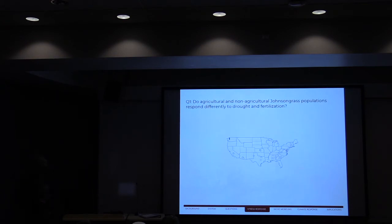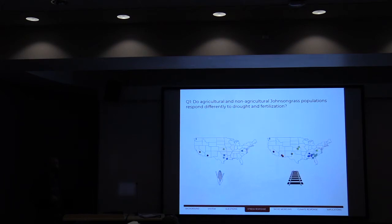Starting with that first question, do agricultural and non-agricultural populations respond differently to drought and fertilization? This is going to be an experimental design, and it's important to select our populations that we work on carefully. Here on a map, these are populations that we have seed material from the same increased garden here in Blacksburg, but their sources are from all these points across the United States. We want to make sure we're selecting the right ones for the experiment. Obviously, we select ag and non-ag, because that's one of our chief questions.